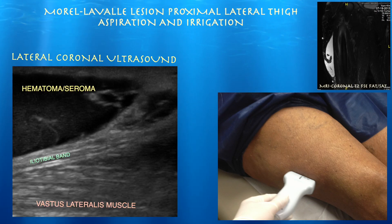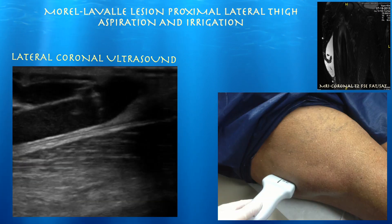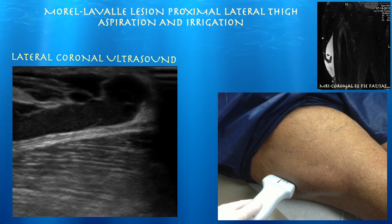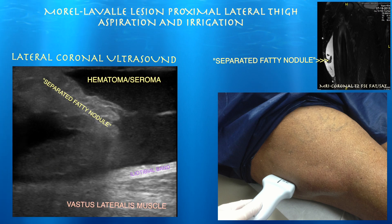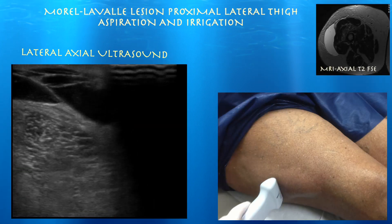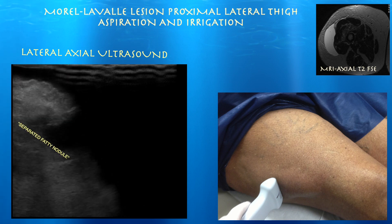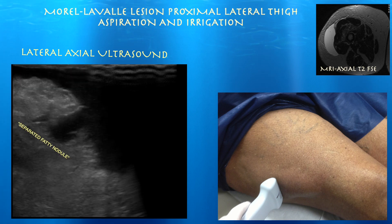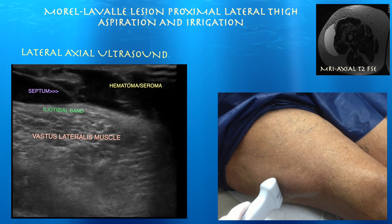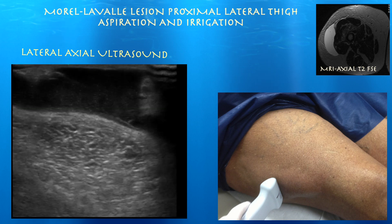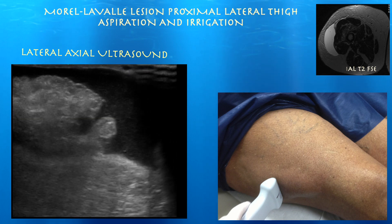Here we're doing a lateral coronal ultrasound where you can see this very large hematoma right above the ITB band. Some fat has become separated from its normal position and is basically hanging inside this large fluid collection. In axial view, here's that fatty nodule. We can also see a septum within this Morel-Lavallée lesion, and there's more fat coming into play.